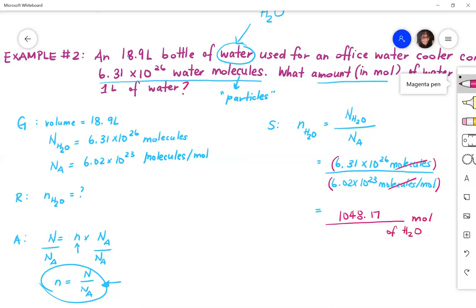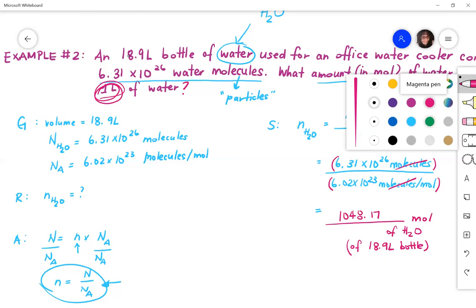Now, if I want to write this in the correct significant digits, I could also write this in scientific notation, if needed. But I'll just keep this here right now. But remember that this number of moles is reflective of the 18.9 liter bottle. Right? The question is asking us for one liter of water. How are we going to solve that? What do you think we should do? Well, you have determined the amount of water in 18.9 liters. So to determine the amount of water in one liter, what you will need to do is multiply the amount of moles that you just solved for by the conversion factor, which is one liter divided by 18.9.